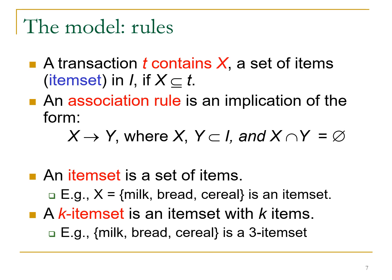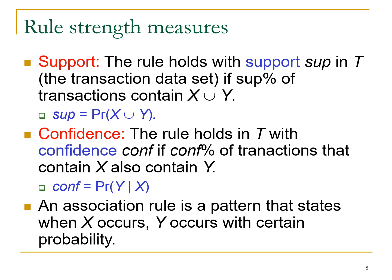In general, if k elements are in a subset, we call it a k-item set — these are basic set notations we are already aware of. We need to find two important measures: support and confidence. Support is the rule that holds with support s in transaction dataset T, defined as the probability of X ∪ Y — that is, P(X ∪ Y). Confidence is the percentage of transactions that contain X and also contain Y — that is, P(Y | X), the conditional probability.